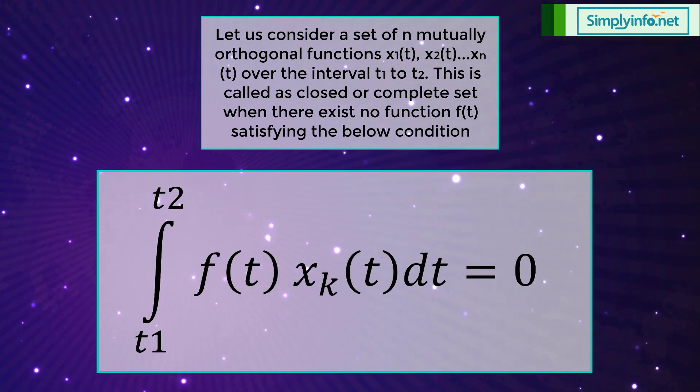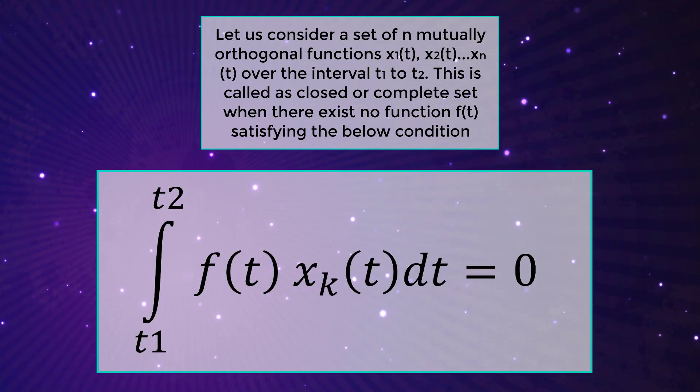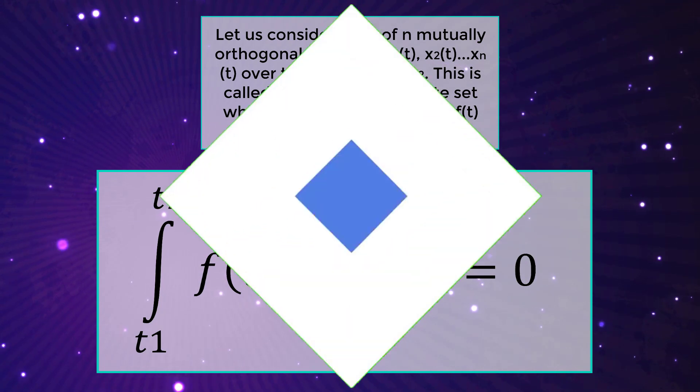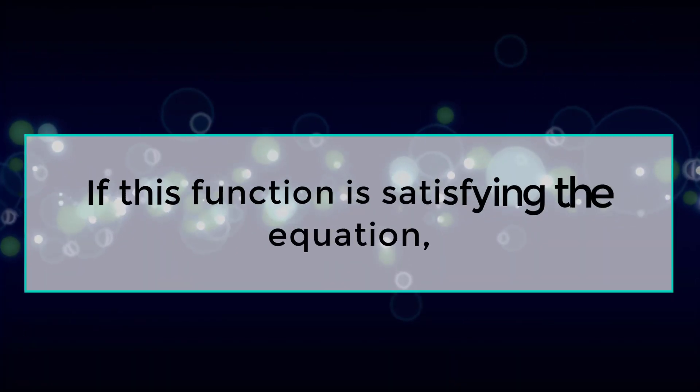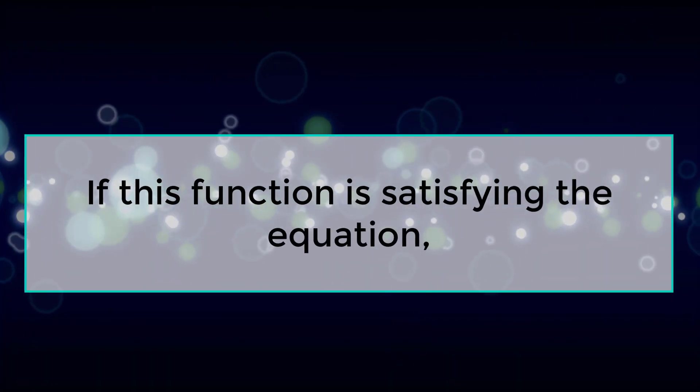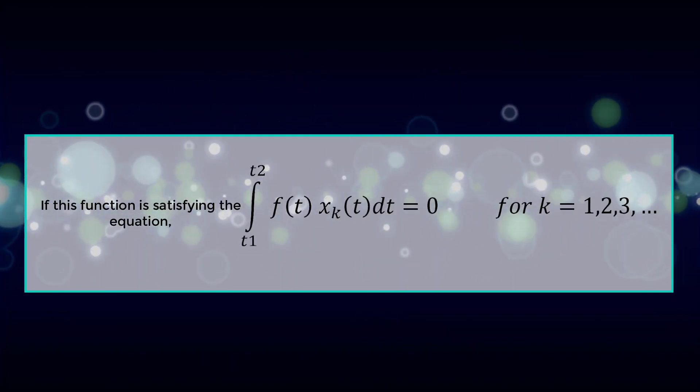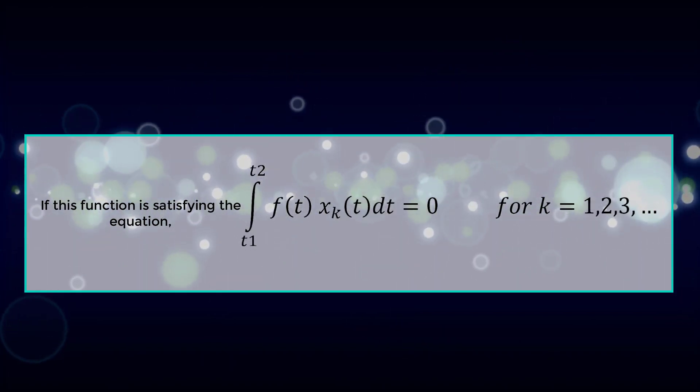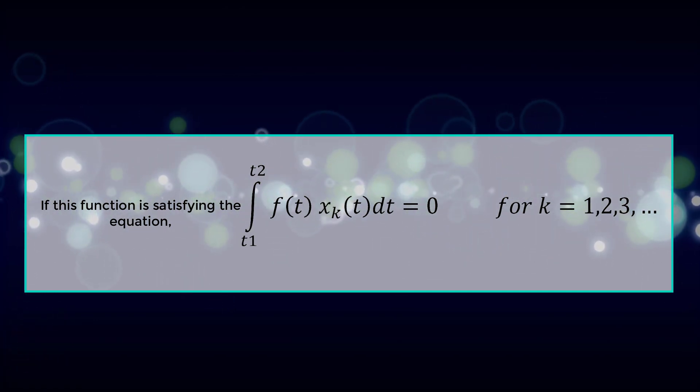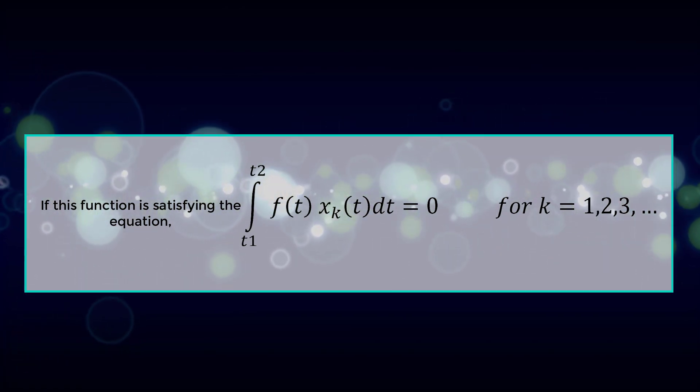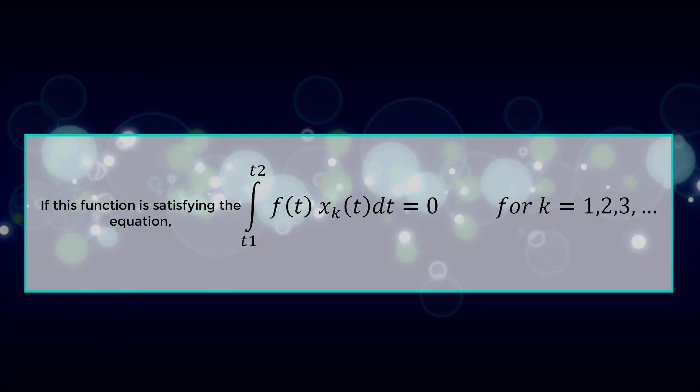If the function f(t) satisfies the equation: integral from t1 to t2 of f(t) times xk(t) dt equals 0 for k equals 1, 2, 3 and so on.